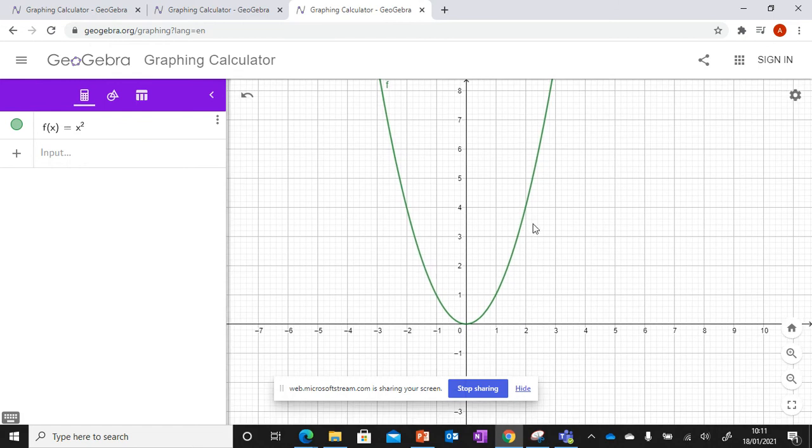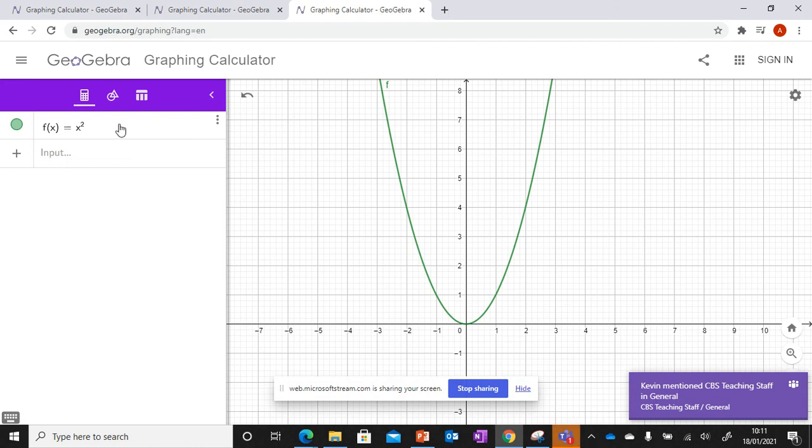So it's very handy if you want to visualize something very quickly. So just go to GeoGebra graphing calculator, and you can type in your functions. Now we can put in multiple functions on the same one.